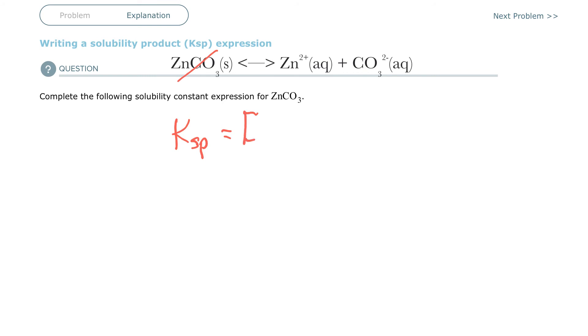It's the product of the concentrations of whatever you've got raised to the coefficient of the balanced equation. So I've got zinc here, that's a 1. I've got carbonate here, that's a 1. That means these guys are going to be to the first power. If this were a 2 or a 3, then you would have a square or a cubed for the zinc here.